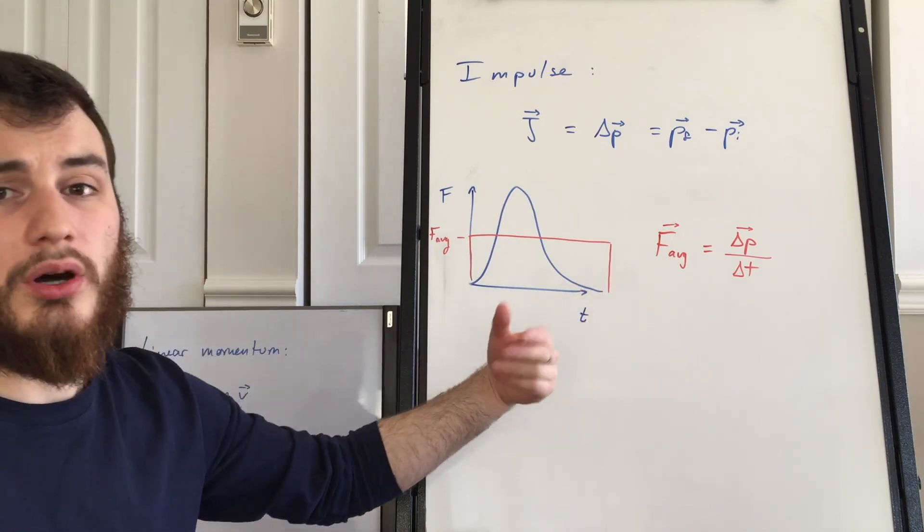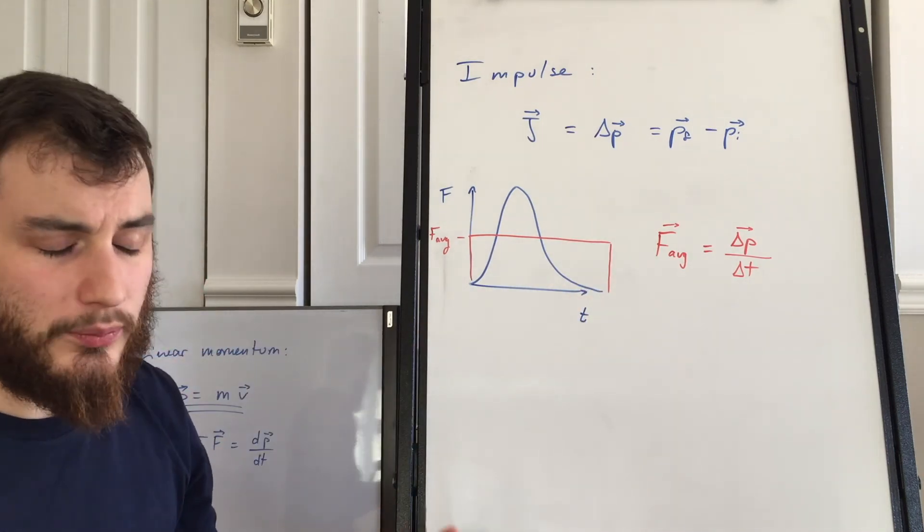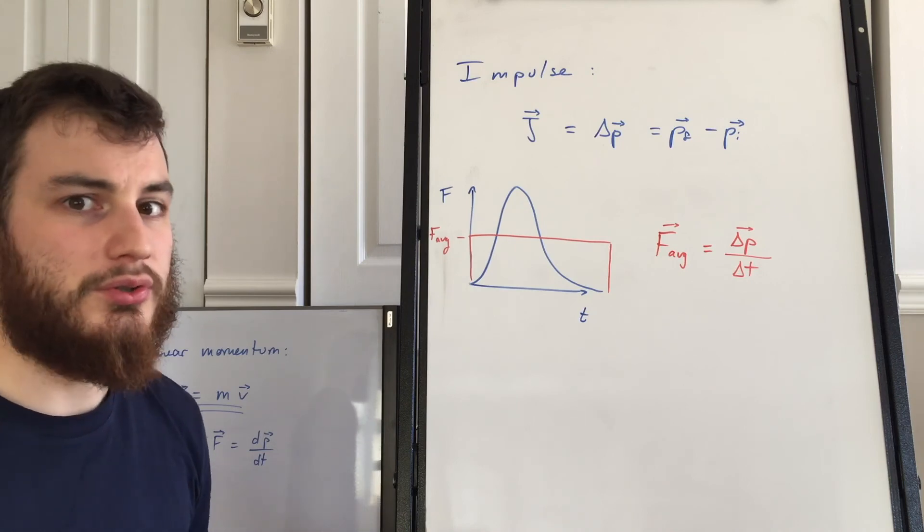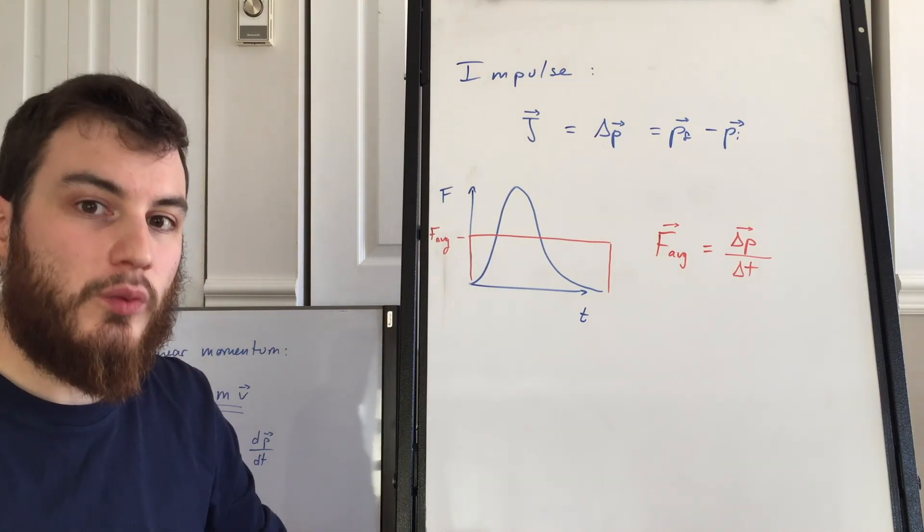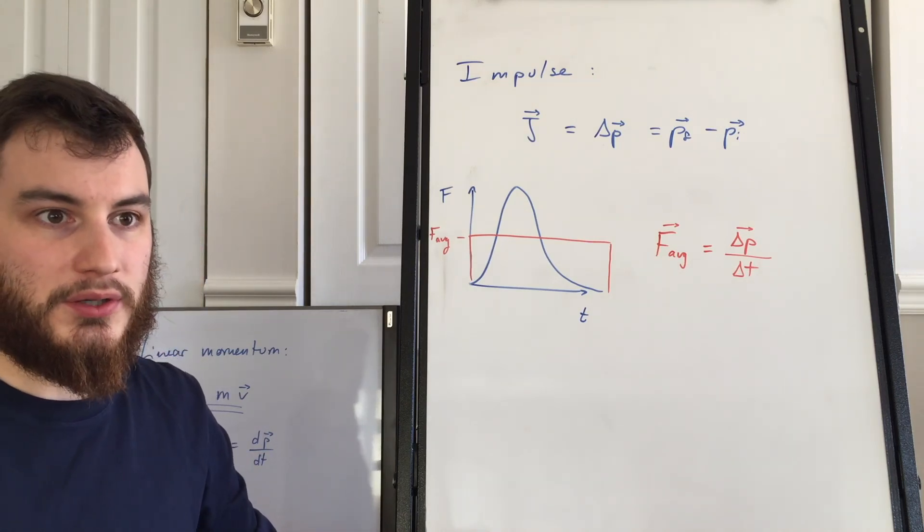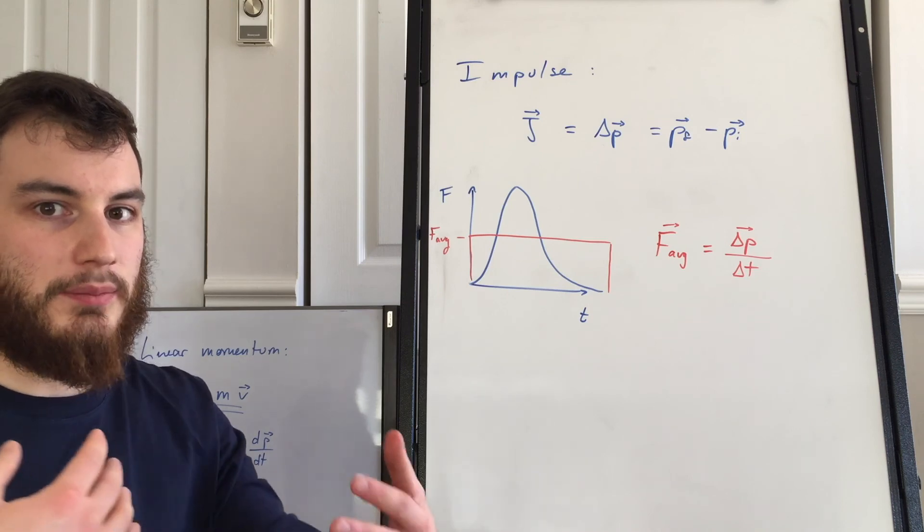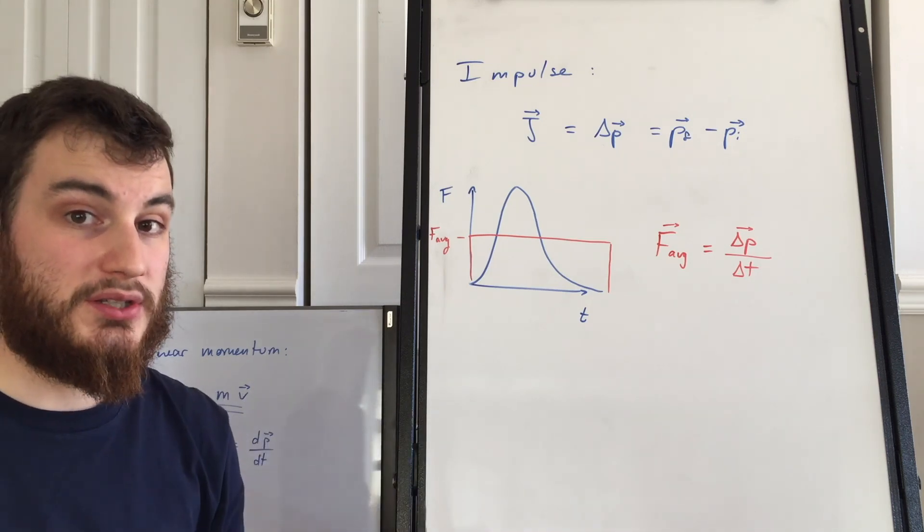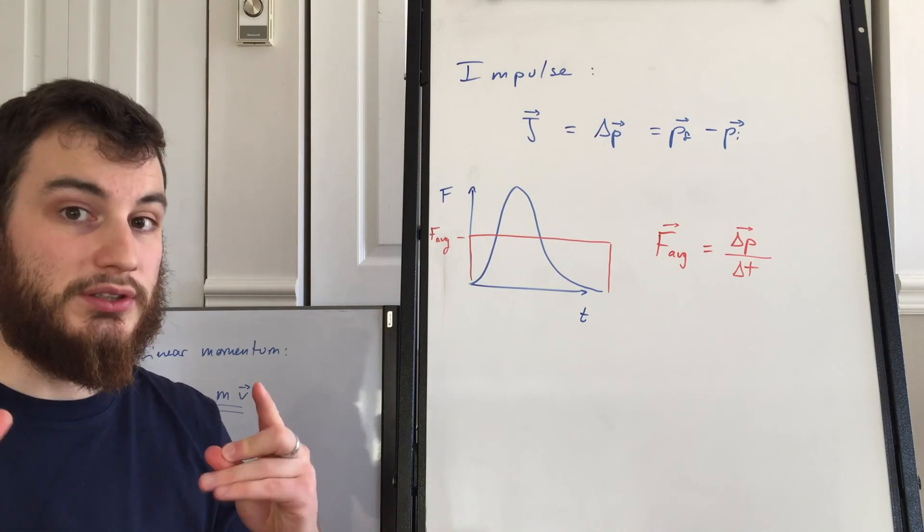This is a vector equation, so obviously we can split it in x and y components and do all of the shenanigans we usually do with vectors. We need to discuss one more thing, then we'll be able to talk about collision and what's happening before and after collision when we have multiple objects in motion. So I'll see you then.